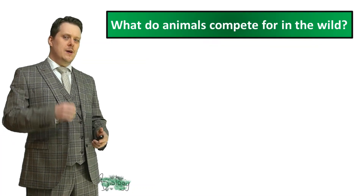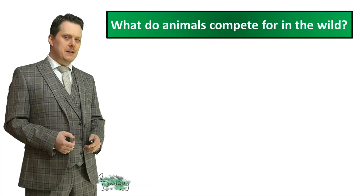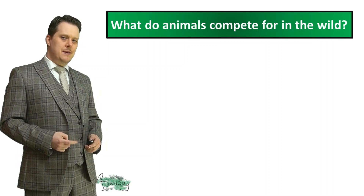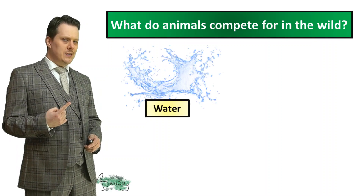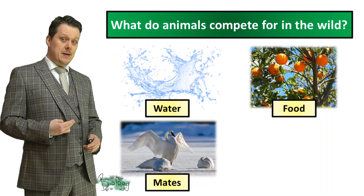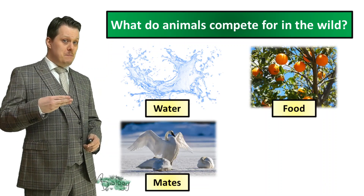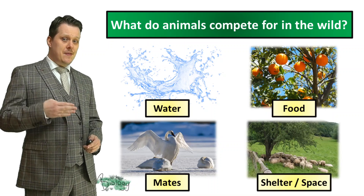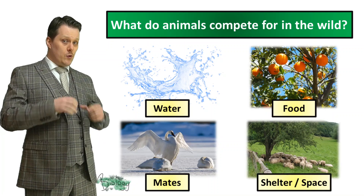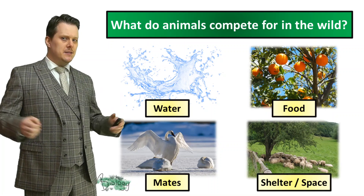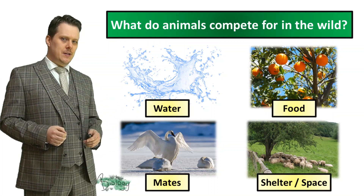So what do animals compete for in the wild? They compete for water, they compete for food, they compete for mates so that they can reproduce, and they compete for shelter and space or territory.